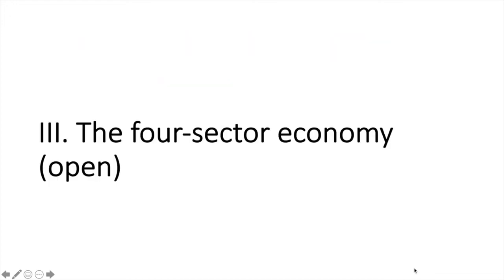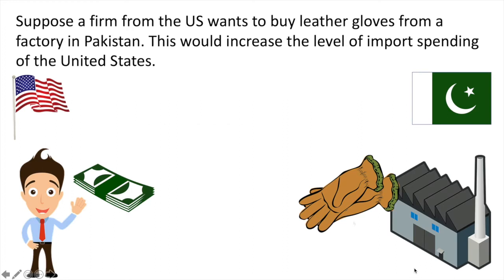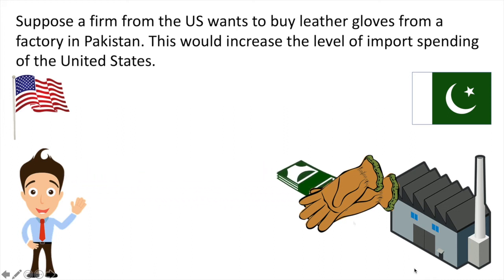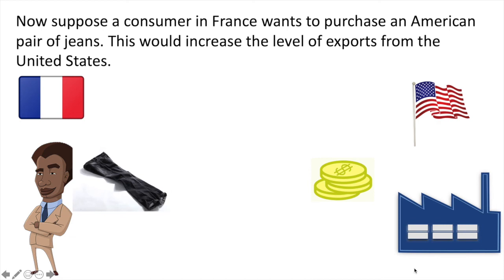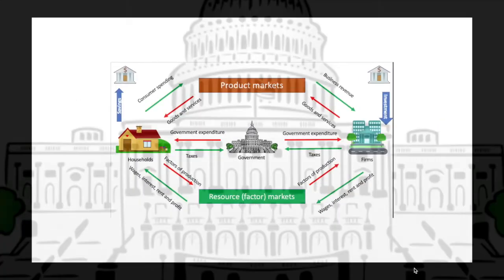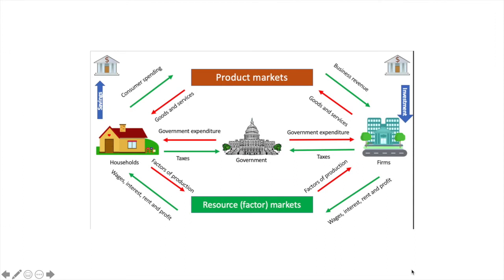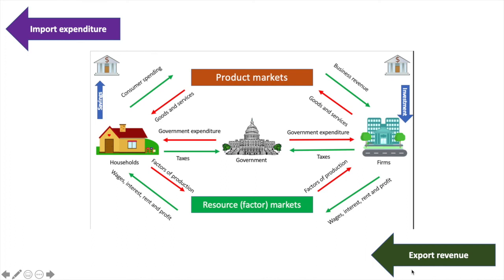We now get to the most complicated model: the open four-sector economy, which includes global trade. Suppose a firm from the US wants to buy leather gloves from a factory in Pakistan — this increases the level of import spending of the United States. Now suppose a consumer in France wants to purchase a pair of American jeans — this increases the level of exports from the US. By selling more goods and services overseas, the American economy sees an injection of export revenue earned by domestic firms. However, this is counterbalanced by a leakage — the amount of money spent on imports purchased from foreign firms. The American company purchasing from Pakistan is a leakage from the American economy and an injection into the Pakistani economy.